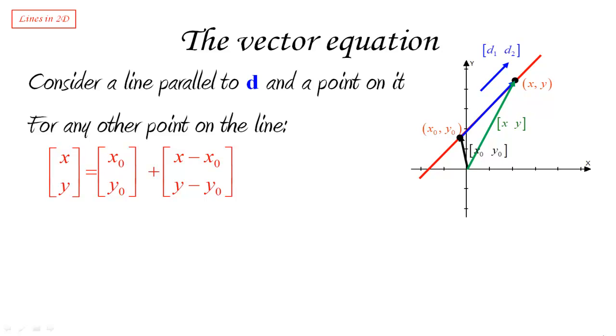That's the same vector that we used for the normal equations. But notice that this vector, of course, being on the line is going to be parallel to the direction vector d1, d2. And therefore, I can write that my new point x, y, which is really the generic point on the line, is going to be given by the vector given by the given point plus some multiple of the direction vector.